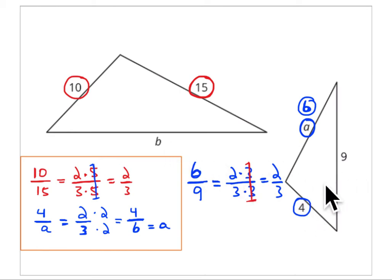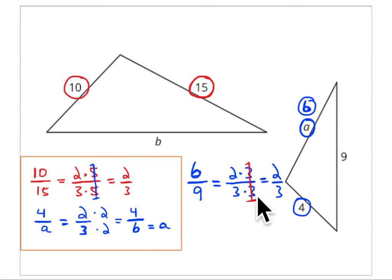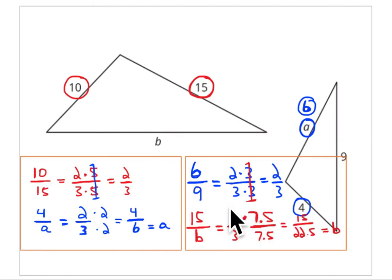I could have used the ratio of 4 to 9 to figure out B, but it's a little bit easier to work with 6 to 9, because that's the same as 2 to 3. You can see the two groups of 3 for the 6 and three groups of 3 for the 9. Divide by 3 to get 2, and divide by 3 to get 3. So this ratio is also 2/3, meaning 6 to 9 equals 2/3. That's the same ratio as 15 to B.